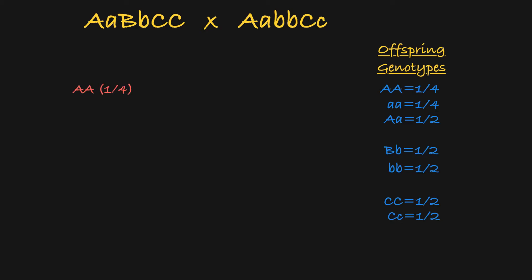We start by listing the possible offspring genotypes for gene A. You'll notice that I'm listing the probability for each genotype alongside it. That will be important later.